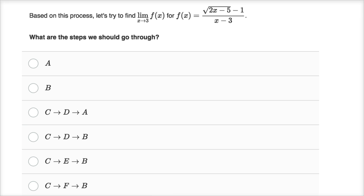So we're gonna have f of three is equal to the square root of, let's see, six minus five, two times three minus five, minus one over three minus three. So in the numerator here, we get zero, because this is one minus one, so this is going to be equal to zero over zero.